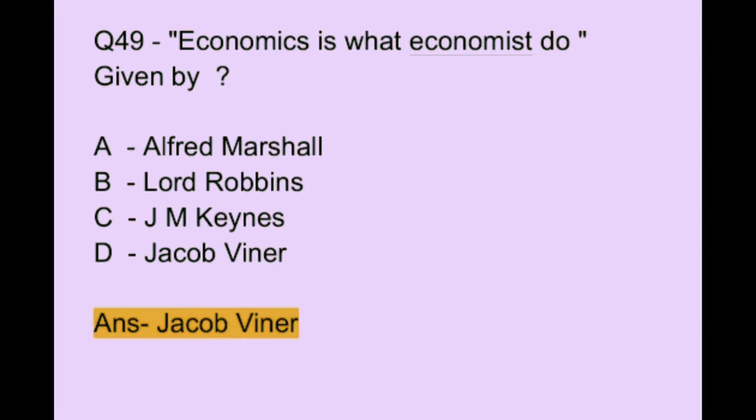Question number 49. 'Economics is what economists do' is given by: Option A: Alfred Marshall. Option B: Lord Robbins. Option C: J.M. Keynes. Option D: Jacob Viner. The correct answer is option D, which is Jacob Viner.